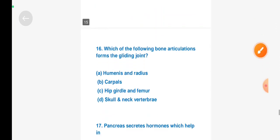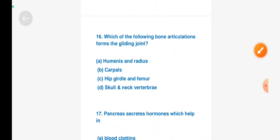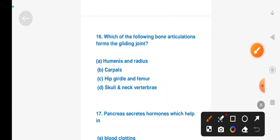Next question: Which of the following bone articulations form the gliding joints? Option A: humerus and radius, Option B: carpals, Option C: hip girdle and femurs, Option D: skull and neck vertebrae. Right answer is Option B, carpals.